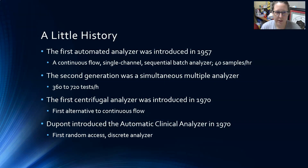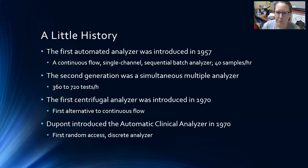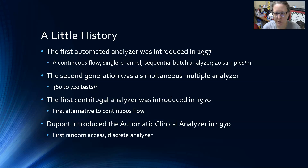Let's start with a little history. The first automated analyzer was introduced in 1957 — more than 70 years ago. It was a continuous flow single-channel sequential batch analyzer, able to do 40 samples per hour, which was faster than manual methods back then. The second generation was a simultaneous multiple analyzer that could do 360 to 720 tests per hour.